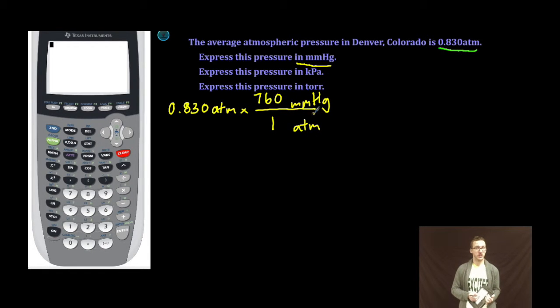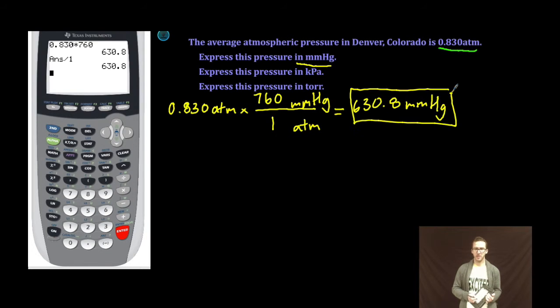So a quick jump to my calculator. 0.830 times 760 equals 630.8 millimeters mercury. Boom.